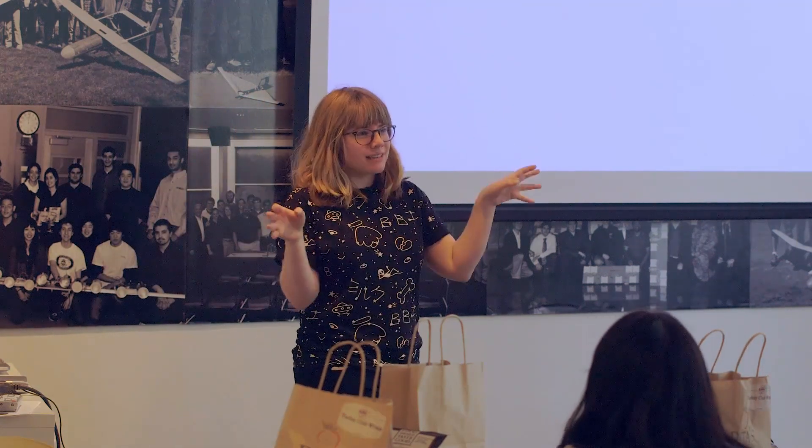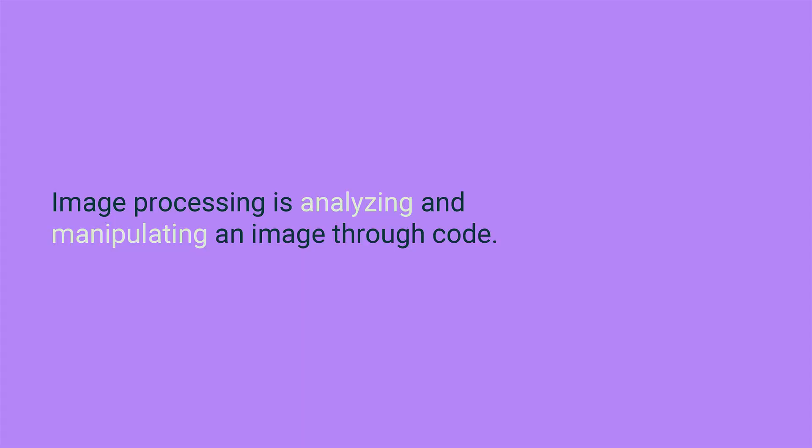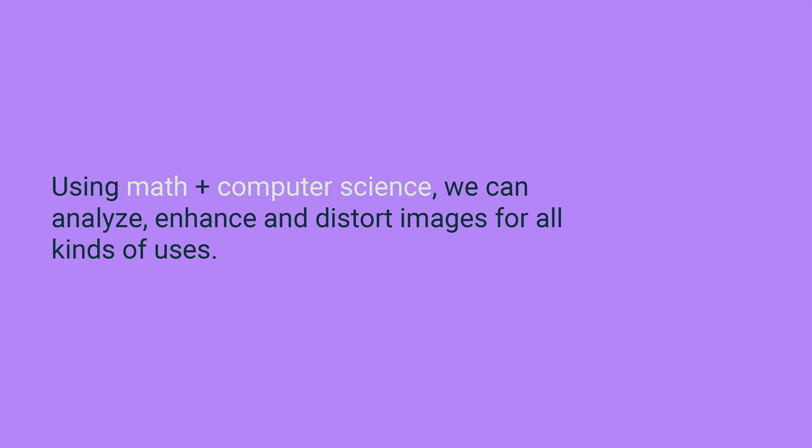A lot of image processing is about manipulating the information that you get when you take a picture — usually to enhance it. Whether that means making it more clear to analyze information in there, or enhancing it in an aesthetic way, like with Instagram or Snapchat. Doing that through code is what we're going to do today. It uses a mix of math and computer science — mathematical functions that manipulate the different pieces of image information — and we're going to use Processing to mix it all together and create our filters.